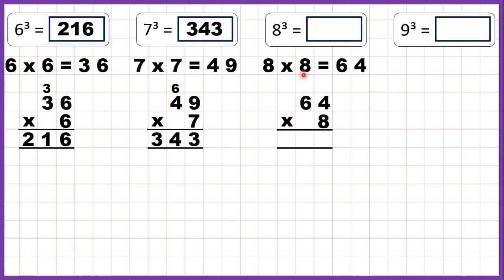For 8 cubed, we work out 8 times 8 which is 64, and then multiply 64 by another 8 because it's 8 cubed, not 8 squared. 4 times 8 is 32, and 6 times 8 is 48 plus 3 is 51, so 8 cubed is 512.